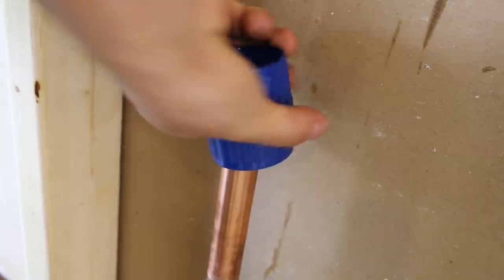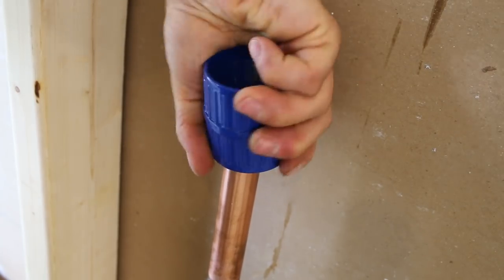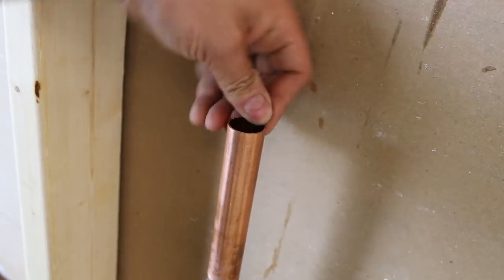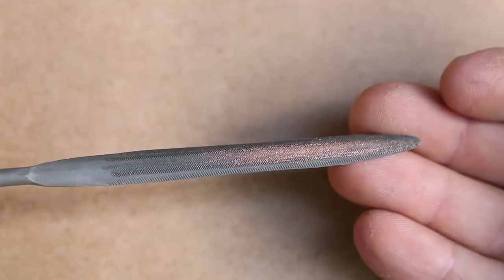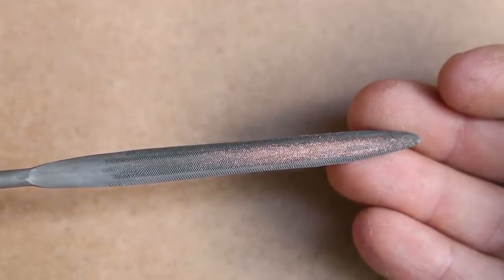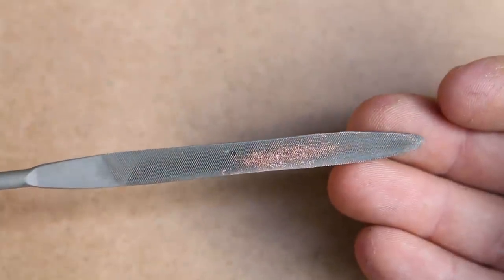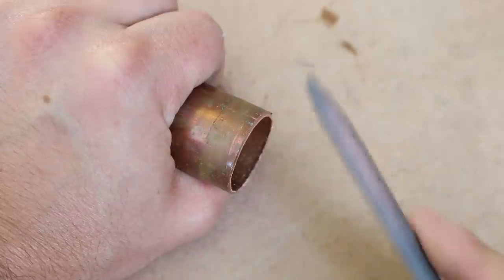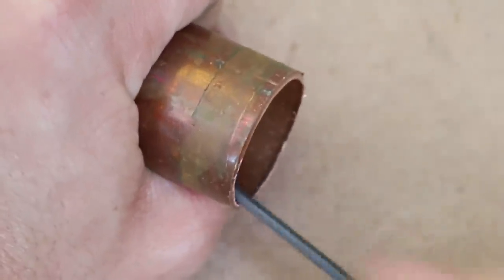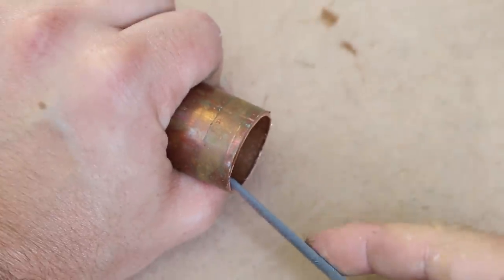So how do I deburr a pipe? For those who haven't done it before, deburring is quite simple and easy to do. If you're using a file, make sure you get one that is half round on one side and flat on the other. The flat side will be used for the outer burr and the half round side for the inner burr, just like this.